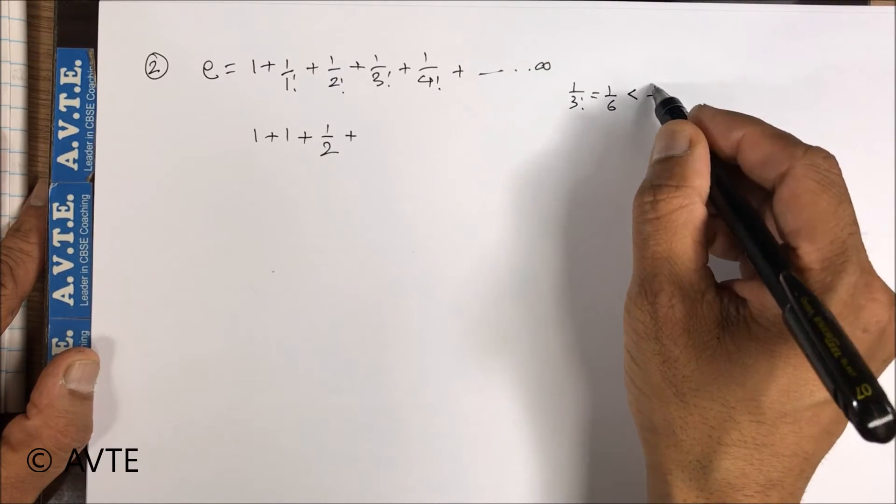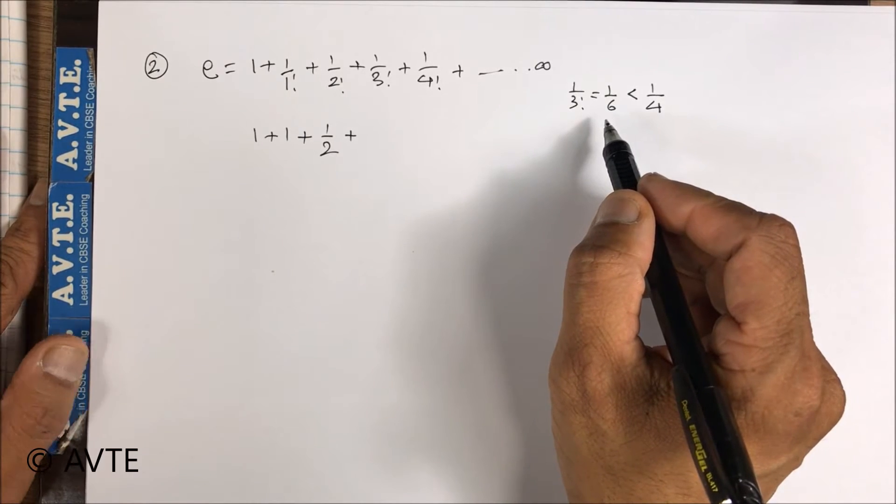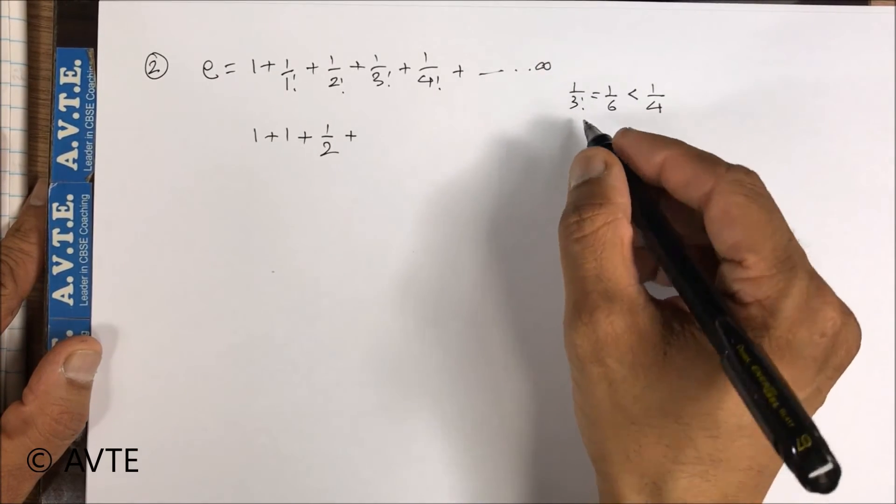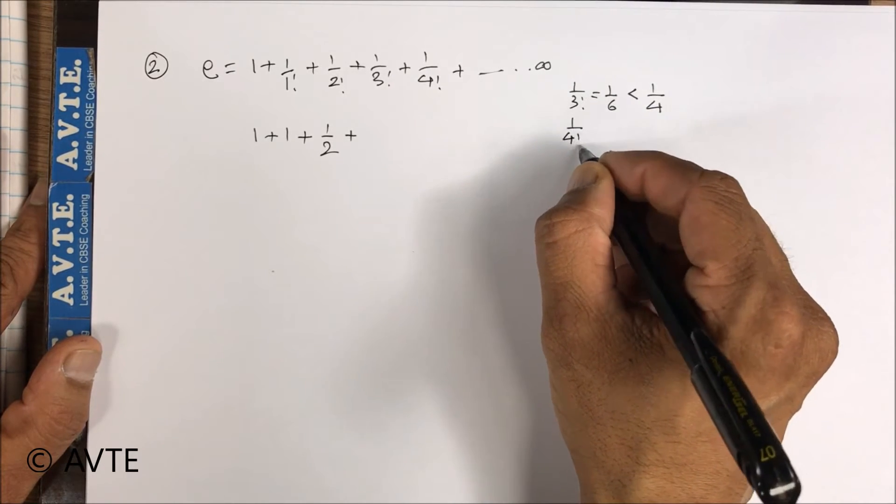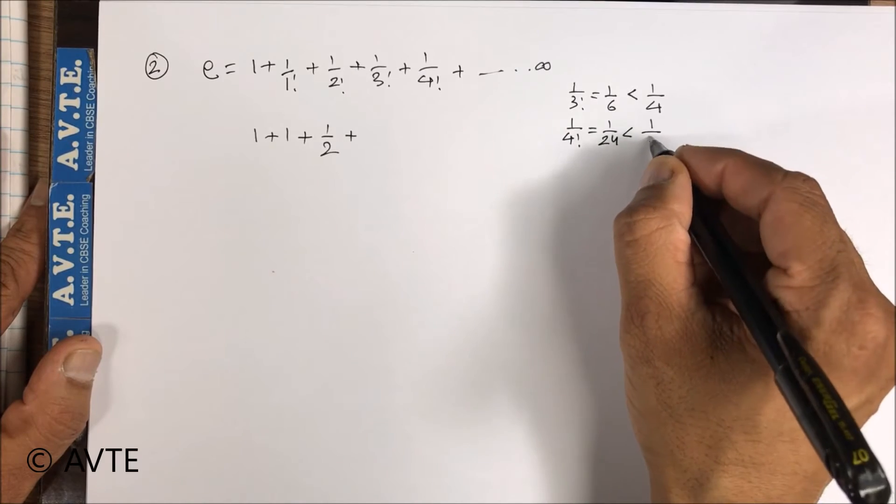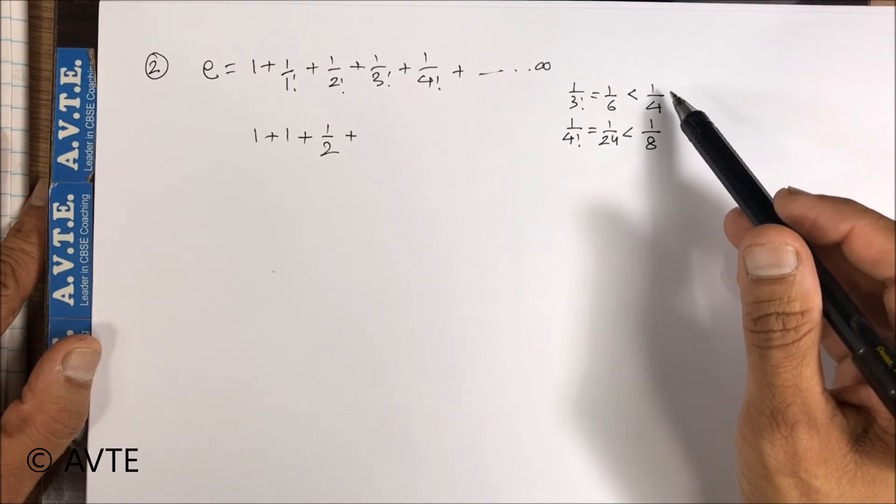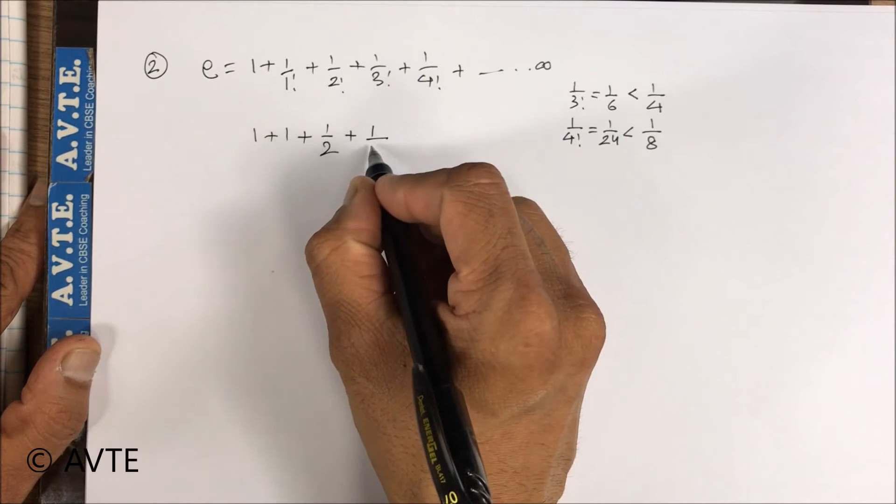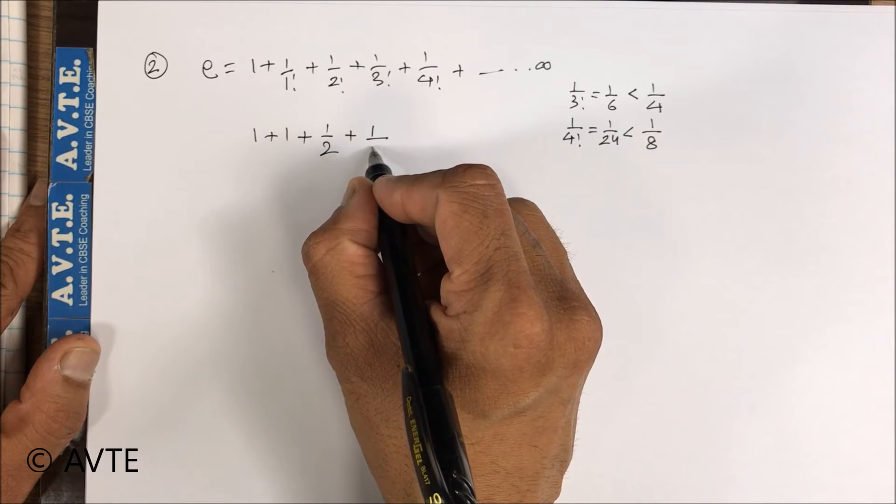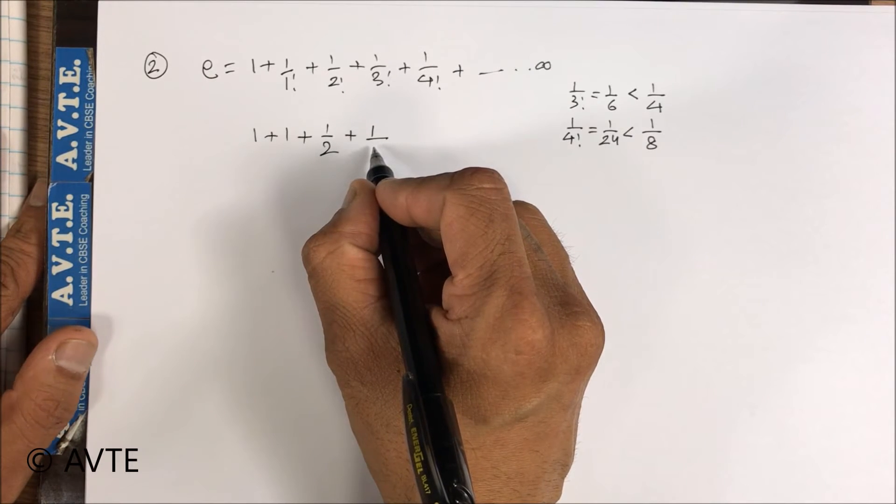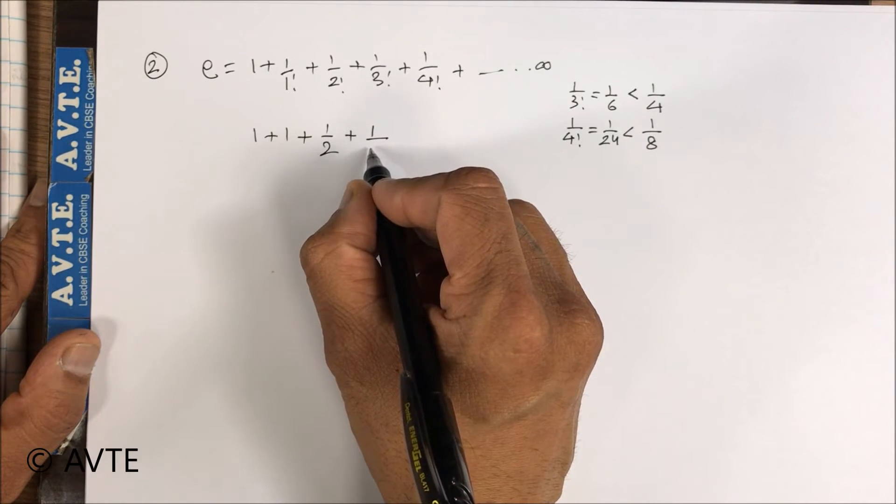Because as the denominator increases, the number overall decreases. Similarly, if I write 1 by 4 factorial which is 1 by 24, that is less than 1 by 8. Why am I taking specific numbers? Because with this we are reaching to a nearest series which can be taken sum to infinity, that is a geometric series.